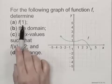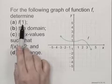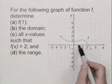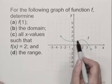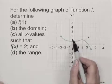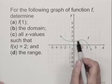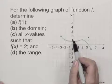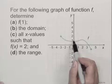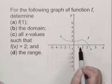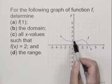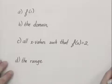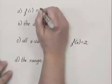First of all, f of 1. 1 is an input. We locate 1 on the horizontal axis, we move to the graph, and then we move over to the y-axis. And if we move straight over to the y-axis, we see that y is 1. So the value of the range that corresponds to the 1 in the domain is 1. So we can say that f of 1 equals 1.